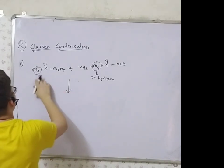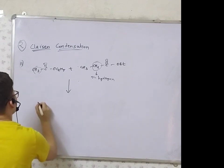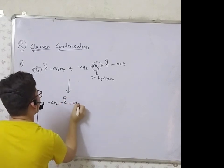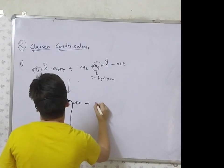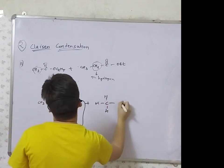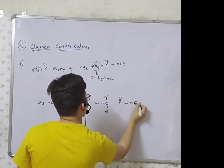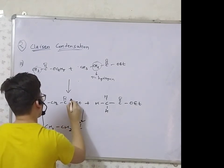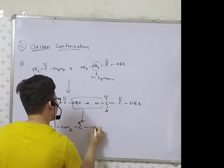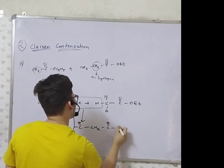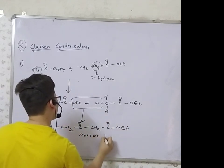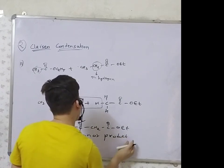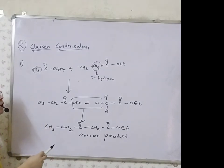The second product is the minor product, formed when the other alpha-hydrogen takes part in the reaction instead. In a multiple-type question, we write both as answers. But in a single-type question, only the major product — from the more acidic alpha-hydrogen — is the answer.